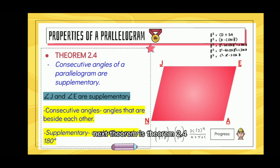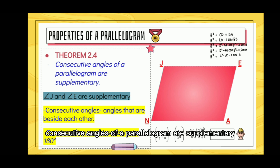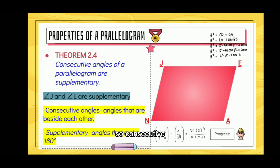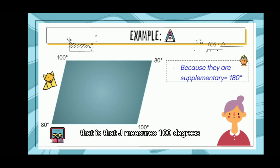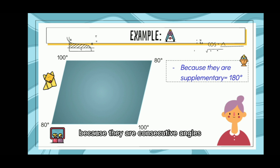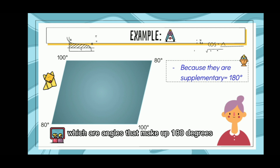Next is Theorem 2.4, which states that consecutive angles of a parallelogram are supplementary. An example is angle J and angle E are supplementary. Consecutive angles are angles that are beside each other, and supplementary angles are angles that make 180 degrees. For example, if J measures 100 degrees, E measures 80 degrees, A is 100 degrees, and N is 80 degrees — consecutive angles have different measurements, and each pair adds up to 180 degrees.